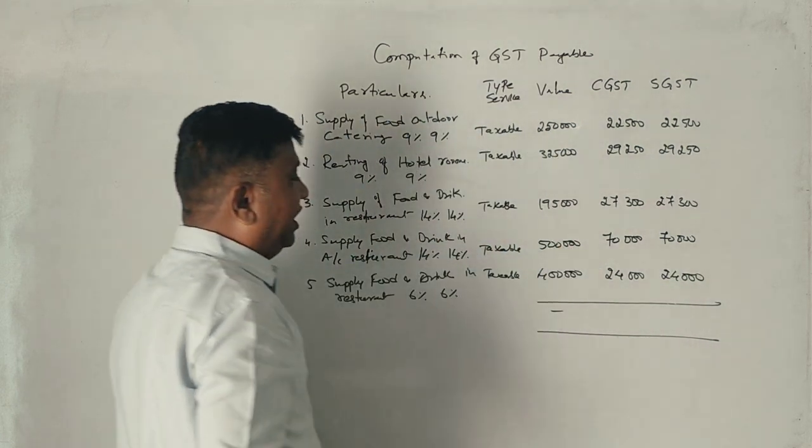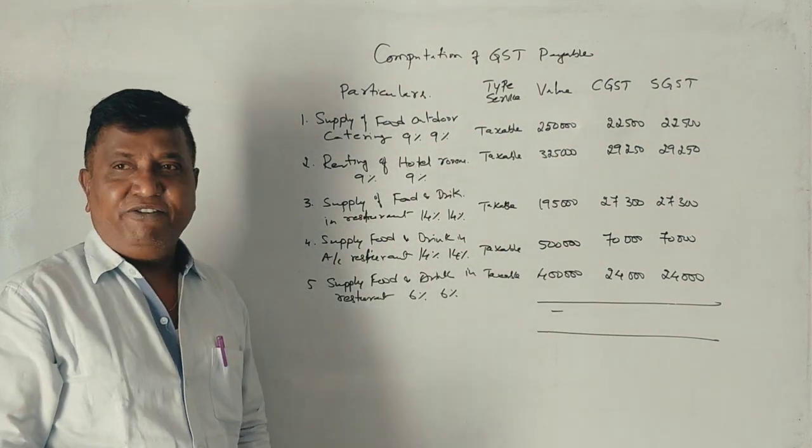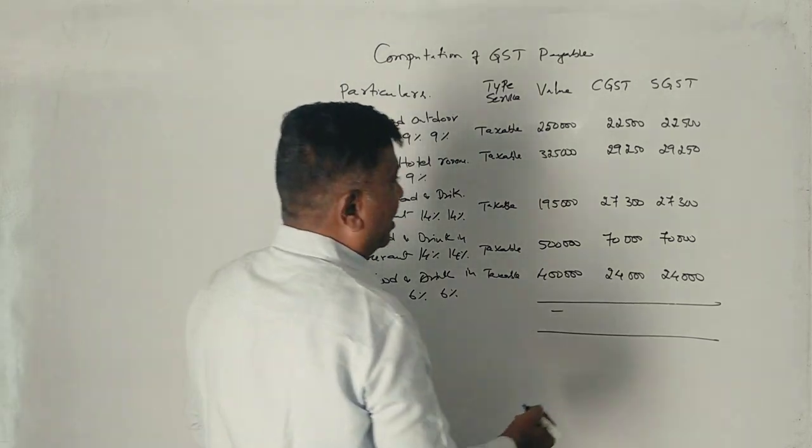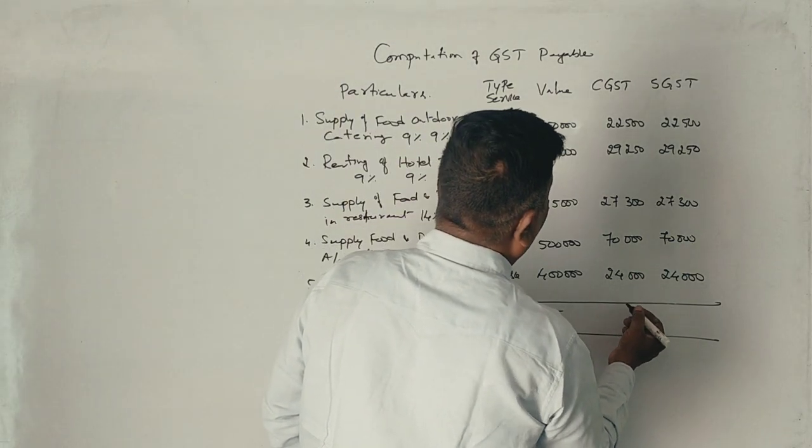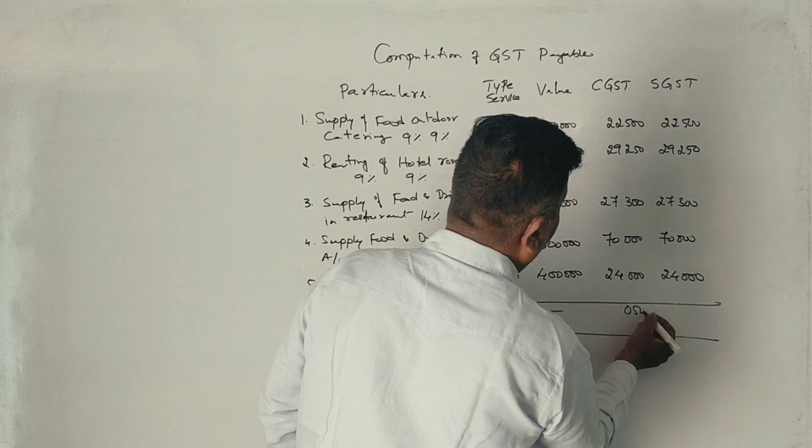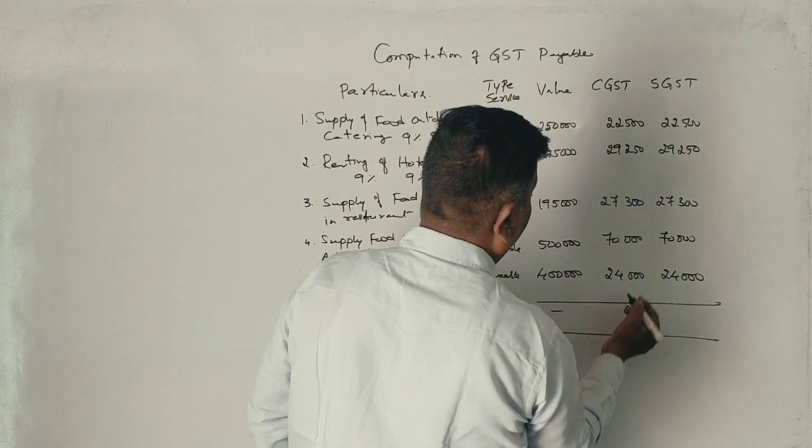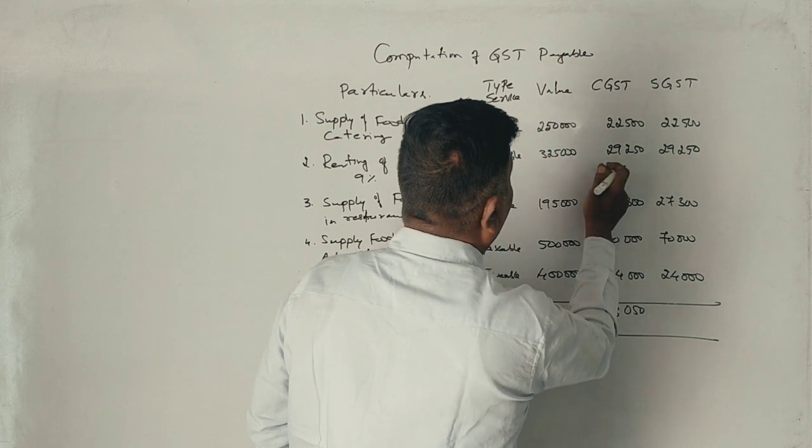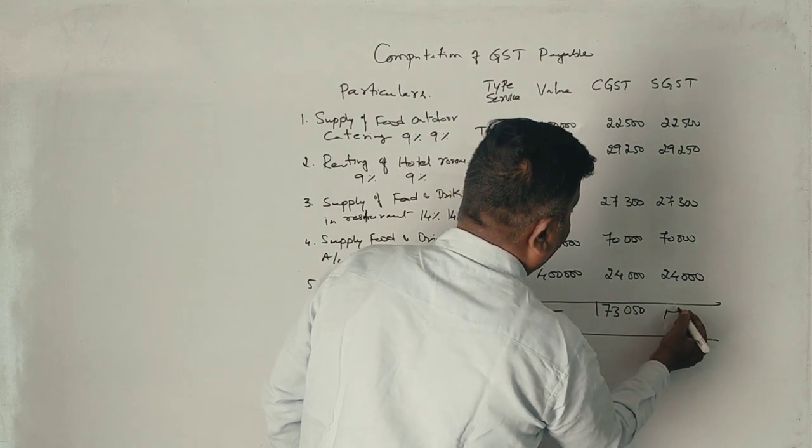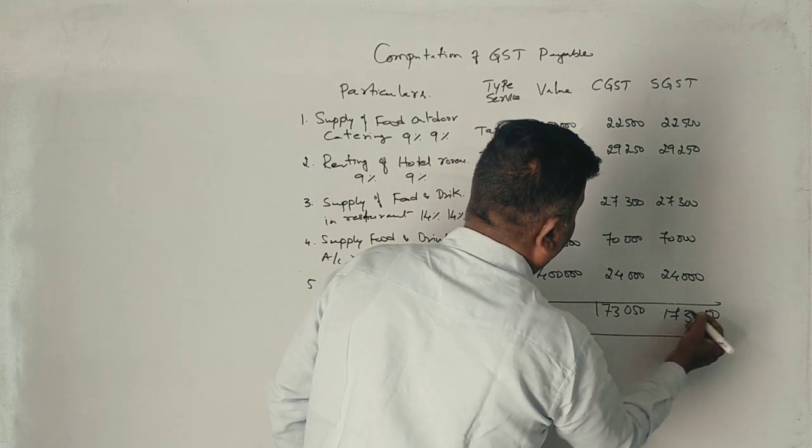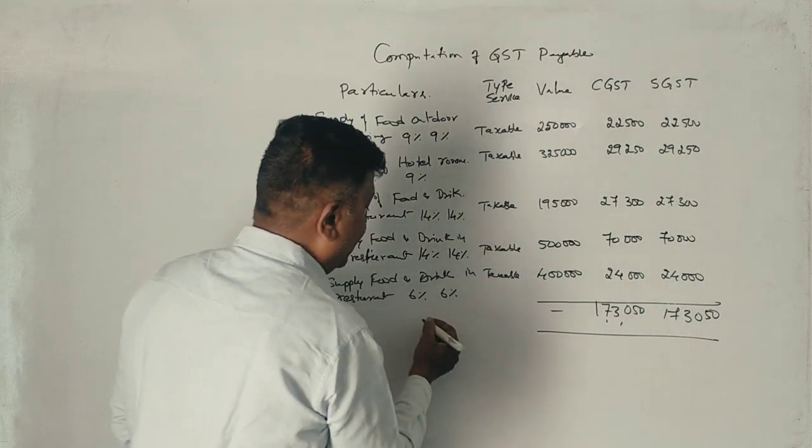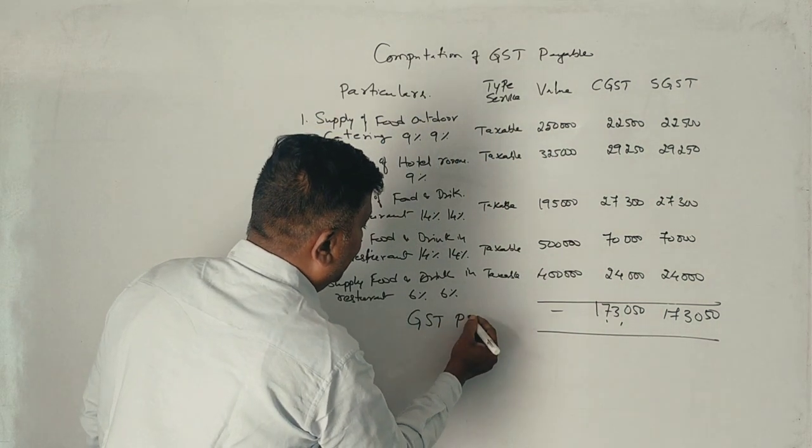Time to get the total value. How do we get the different rates? So we get CGST total 1,73,050, SGST 1,73,050. This is the GST payable.